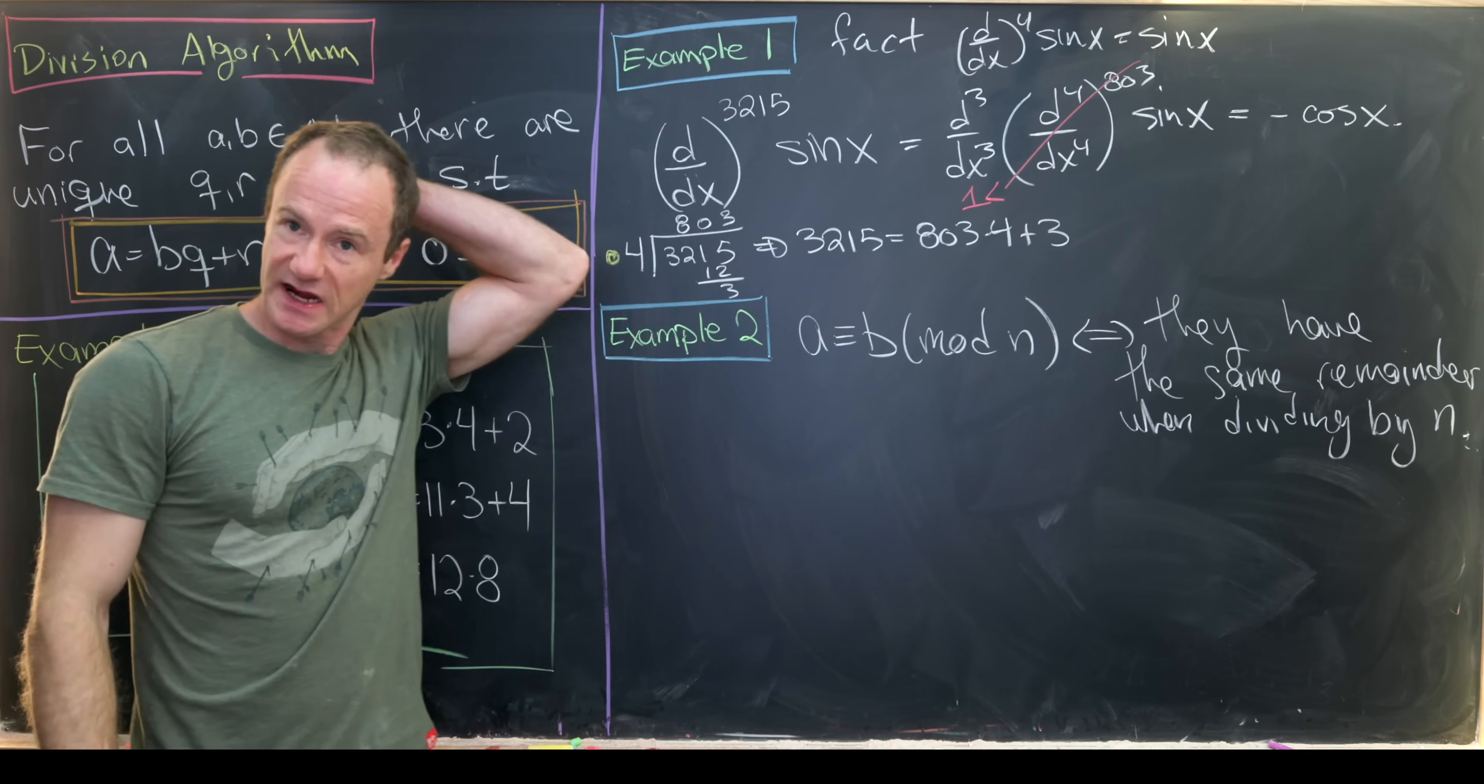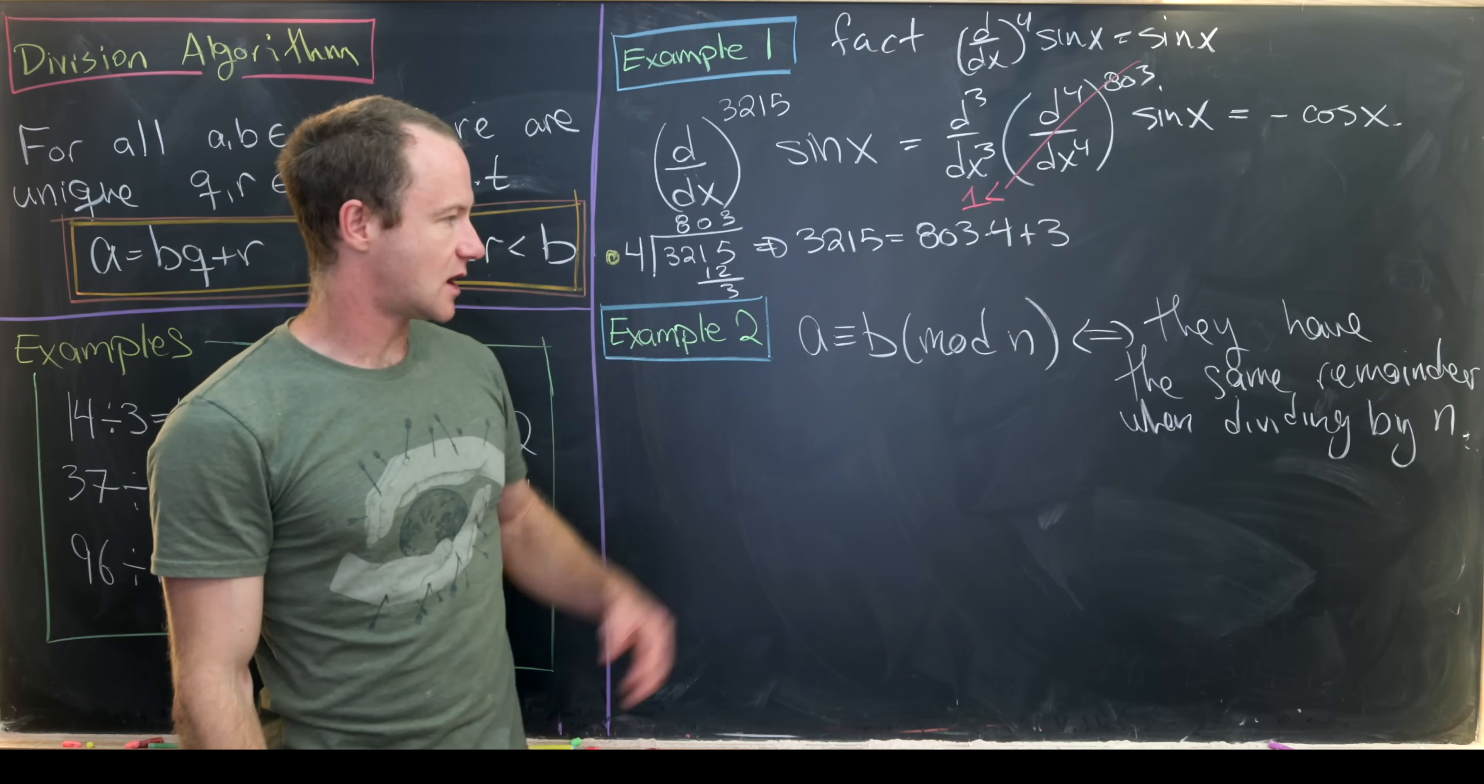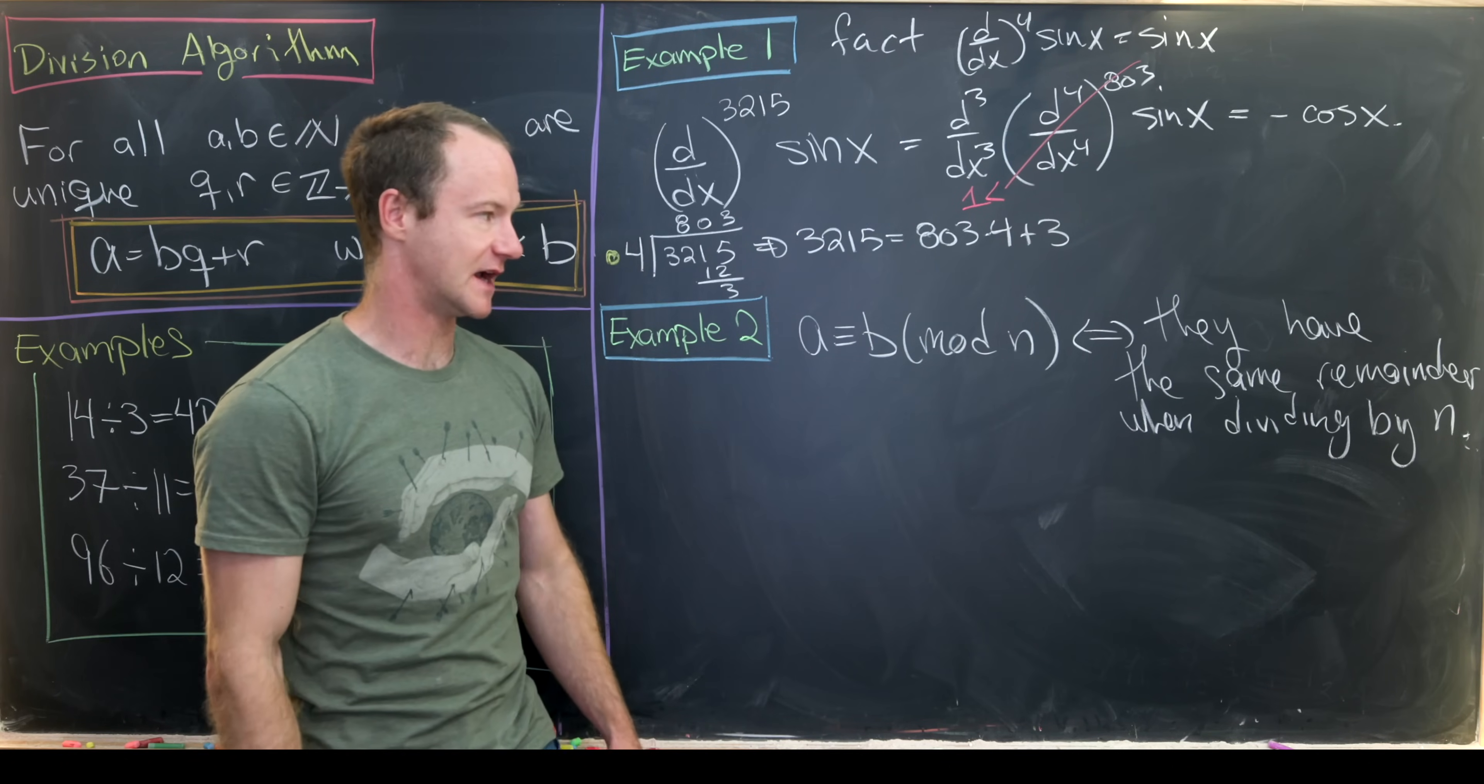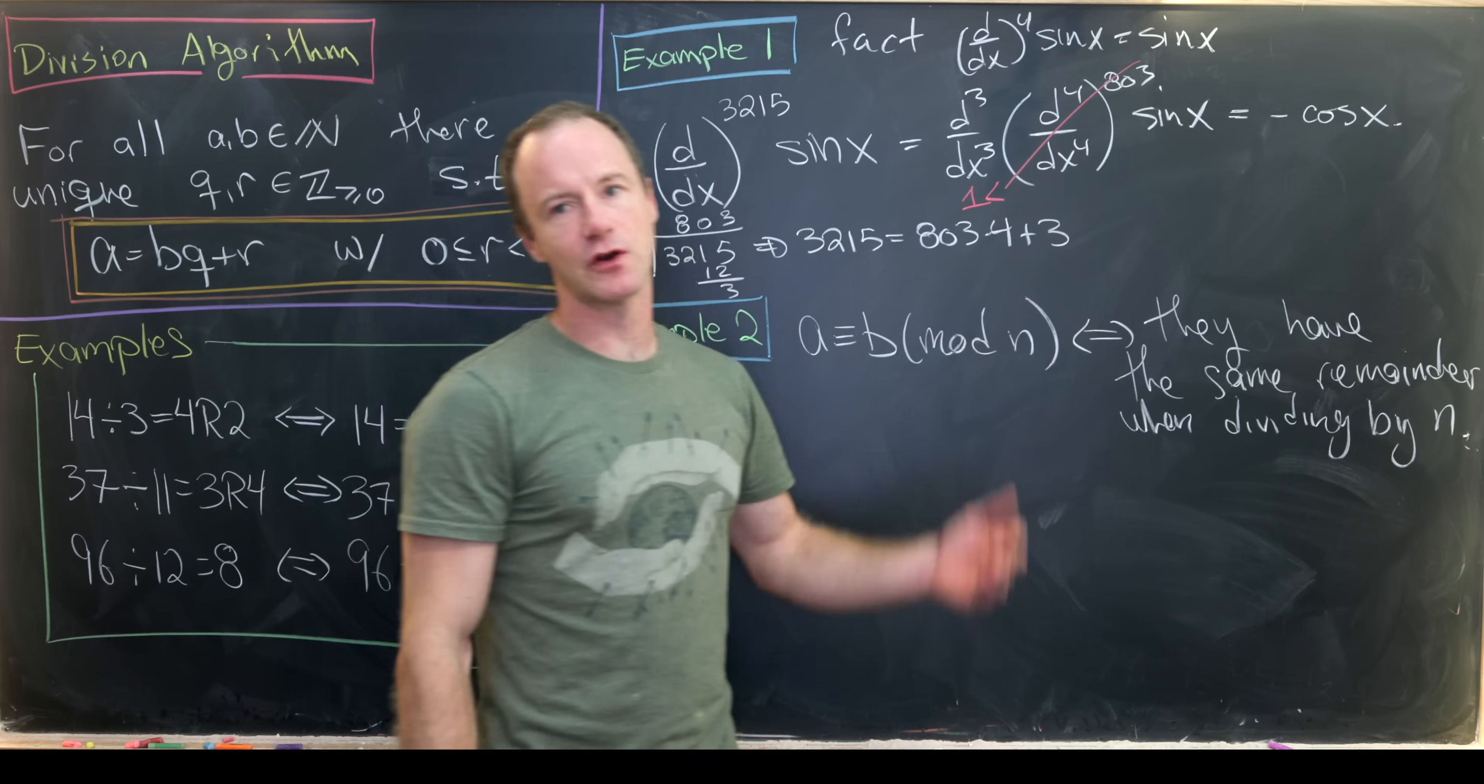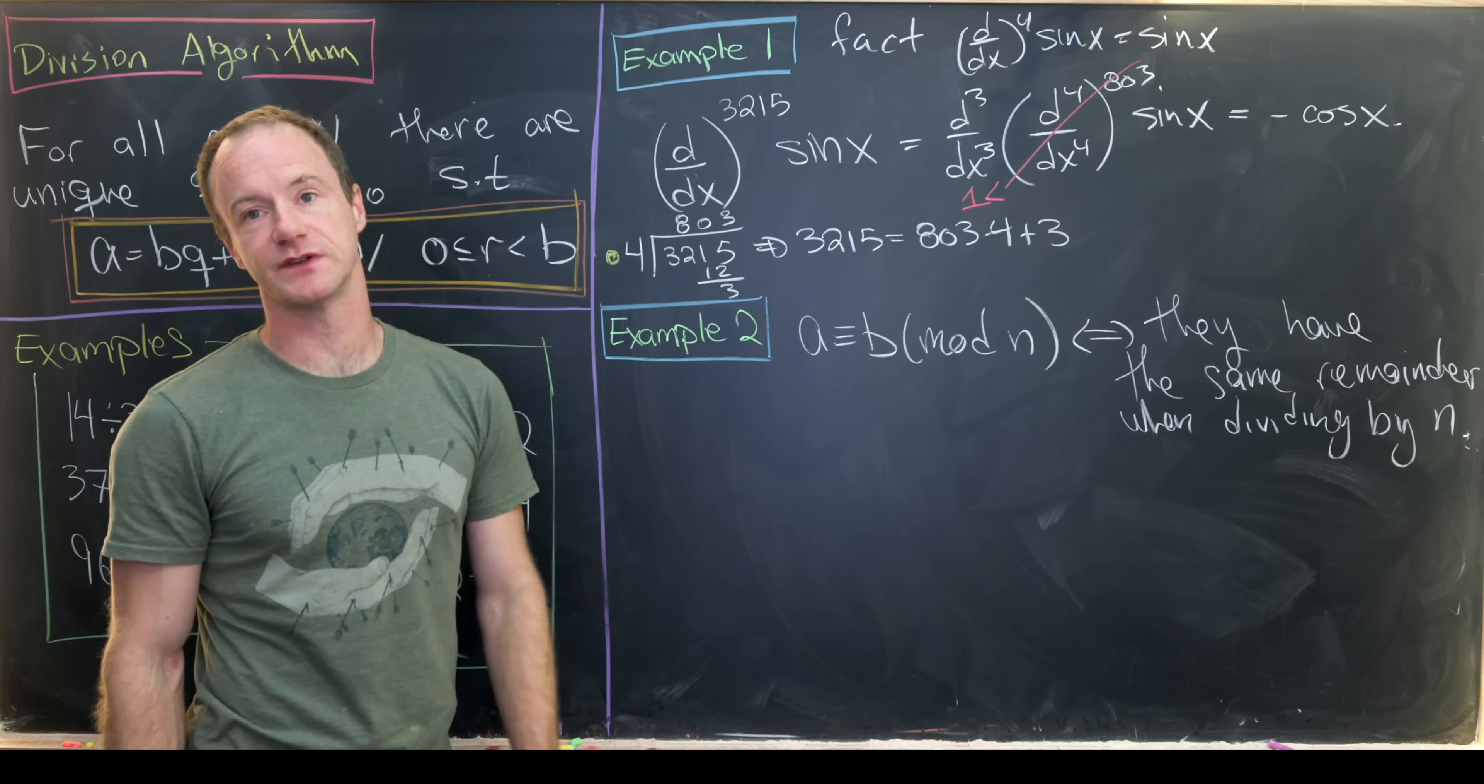And then our second example, which we won't prove, we'll just provide some examples, is that a is congruent to b mod n if they have the same remainder when dividing by n. That's an if and only if statement, which means we could take that as the definition for this congruence mod n.